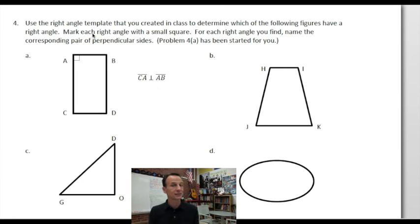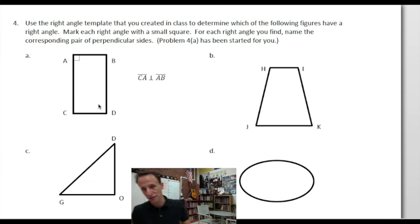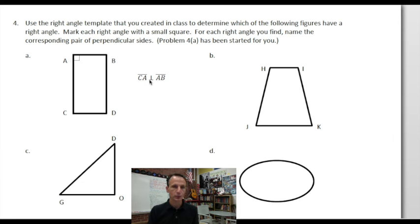If you look at 4a here, it's showing it. Mark each right angle with a small square — they've done one for us and written it out. We can tell looking at this rectangle that there are four right angles. We don't have to pretend we're not as bright as we are. They've said: line segment CA — this symbol means 'is perpendicular to' — is perpendicular to line segment AB.